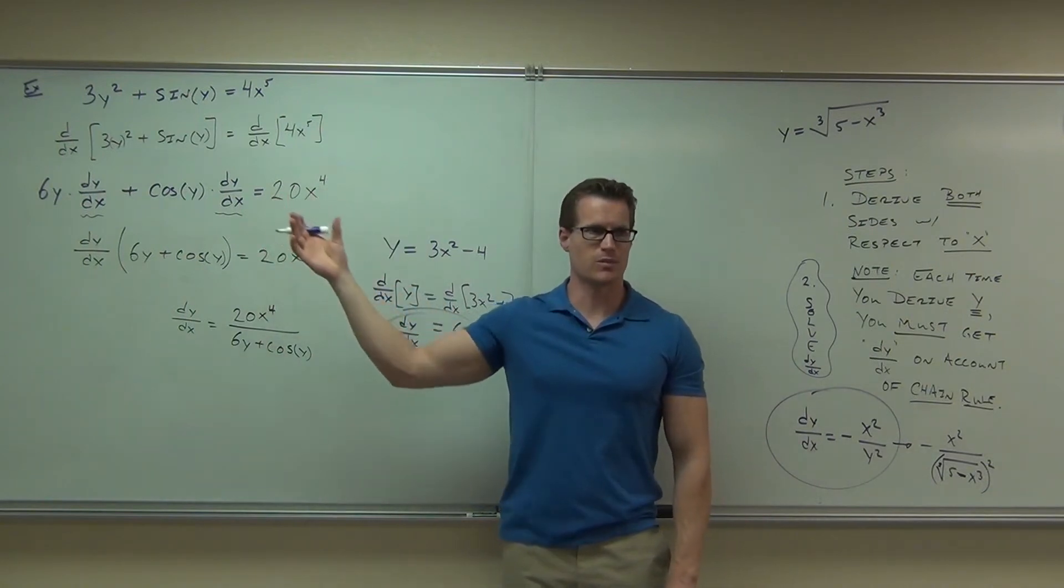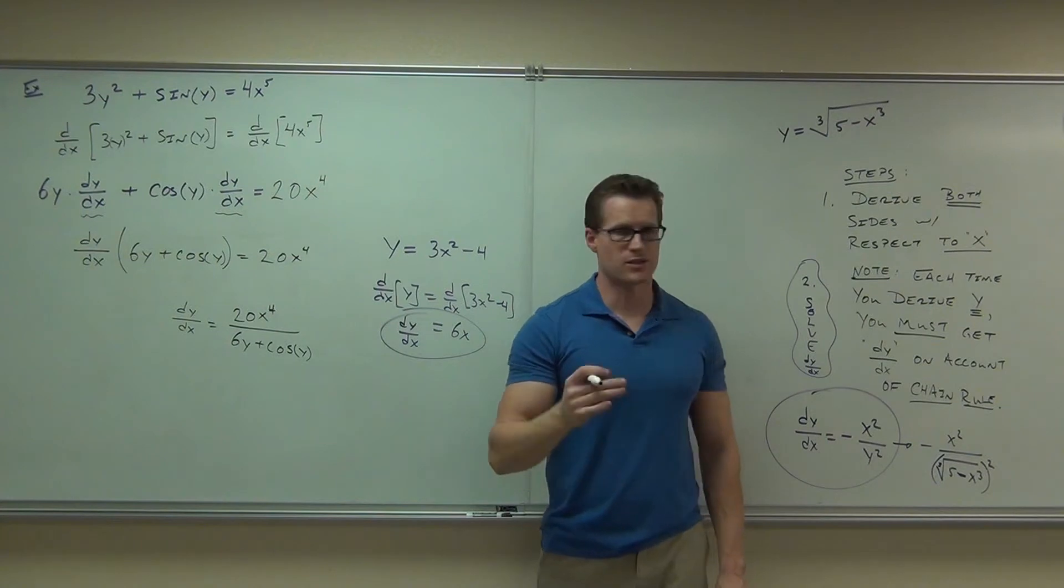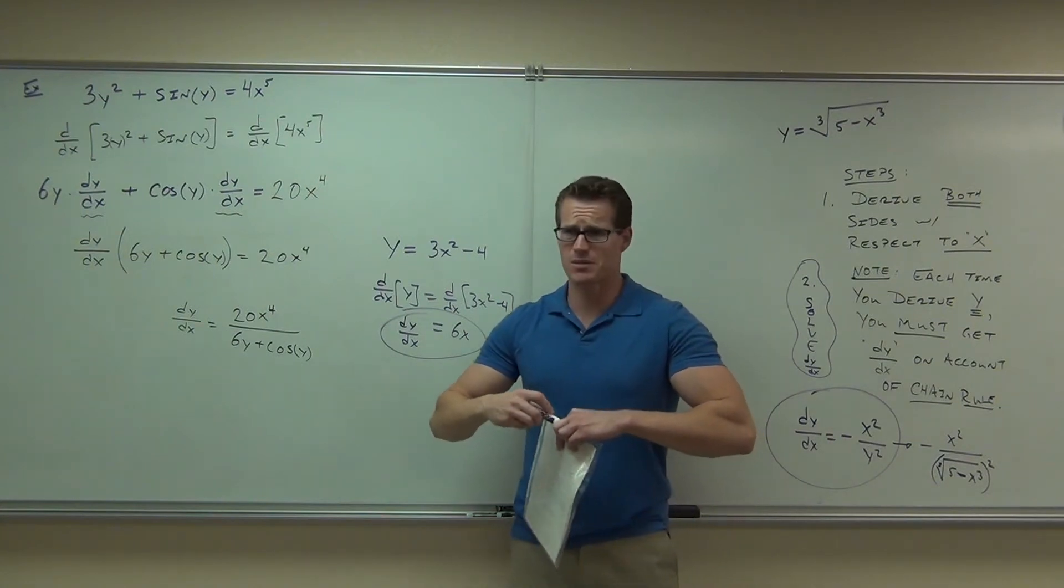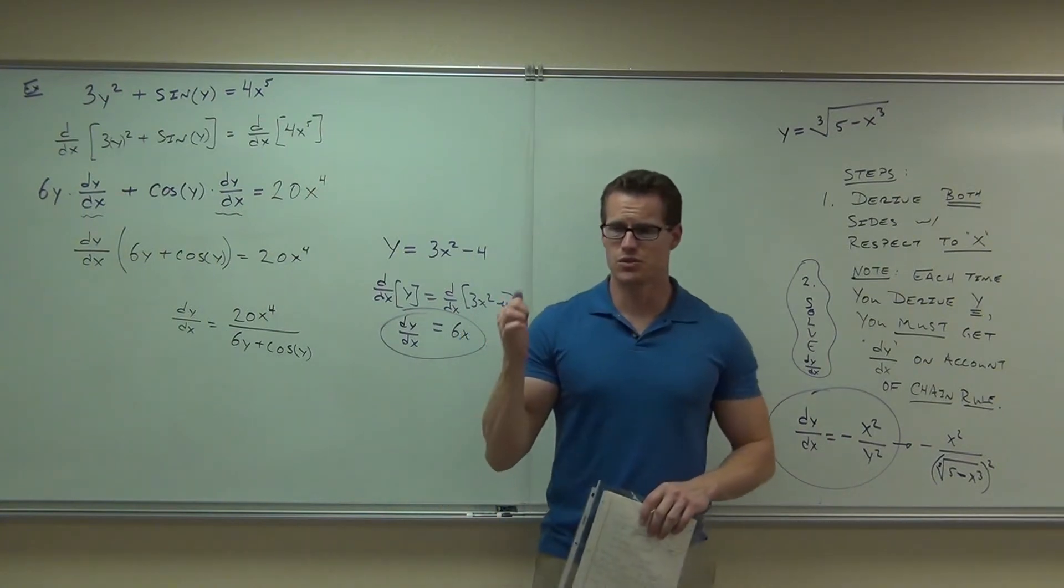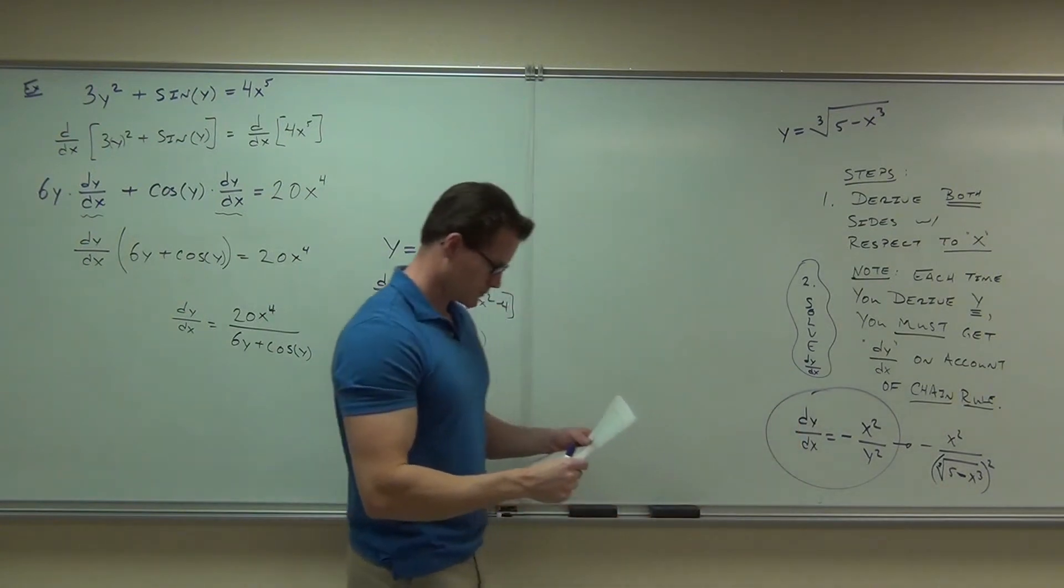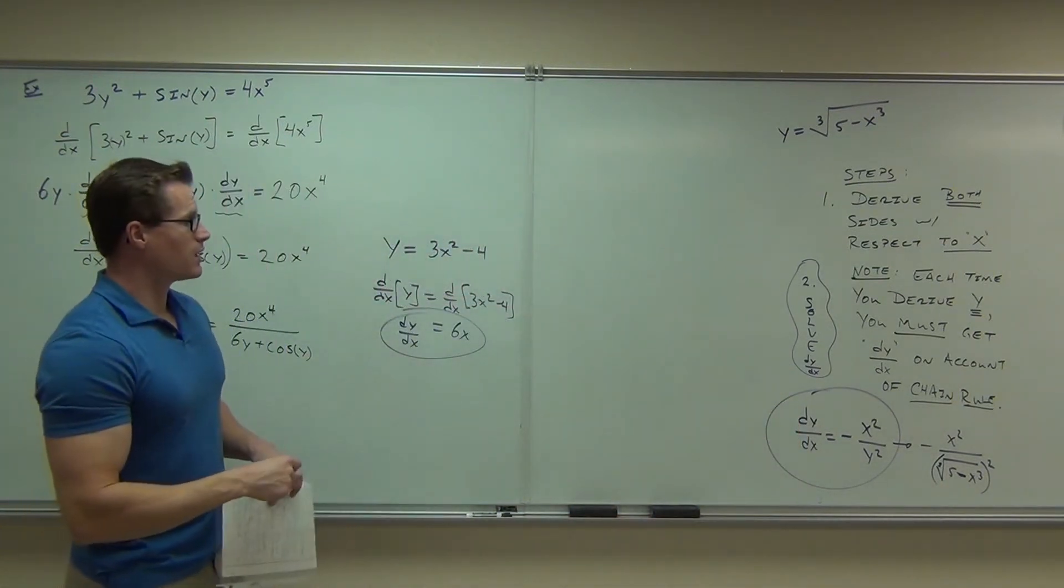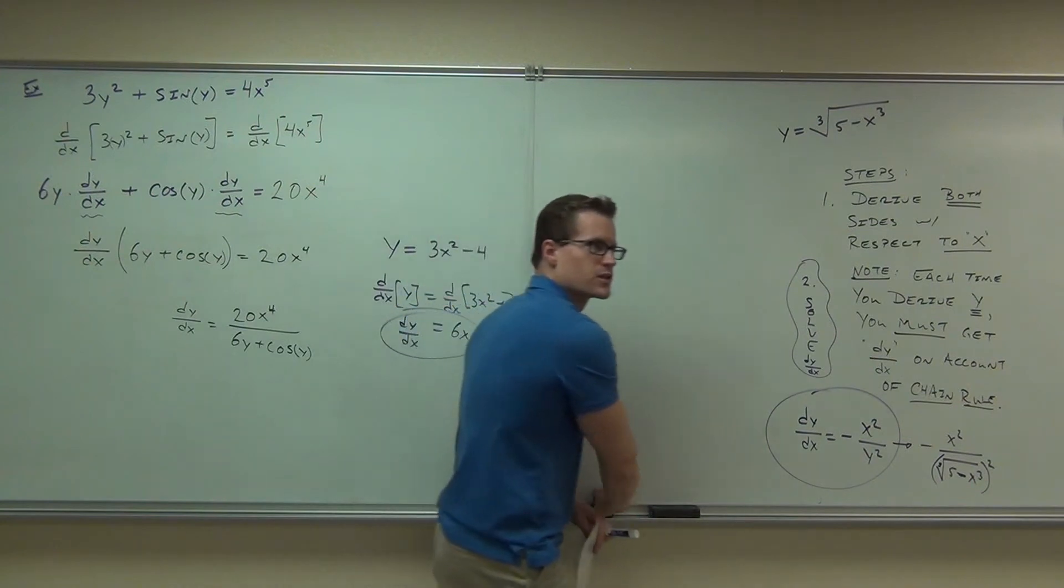Implicit just comes about because sometimes you can't solve for one. And that's why we have it. Still means the same thing. Still a derivative, just you cannot solve that for one. Good question. Are you ready to move on? Are there any other questions on this before we do?